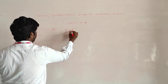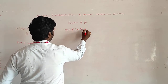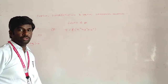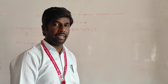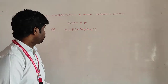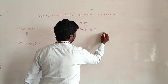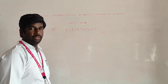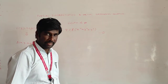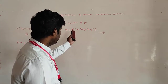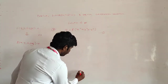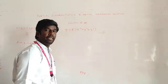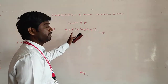Let us take one more example. That is z = F(x² + y² + z²). This is the given equation, taking it as equation number 1. In this case I am going to form a partial differential equation by eliminating the arbitrary function F.